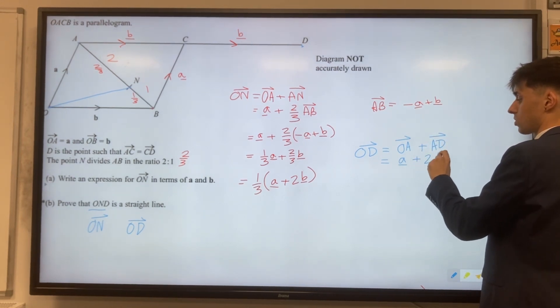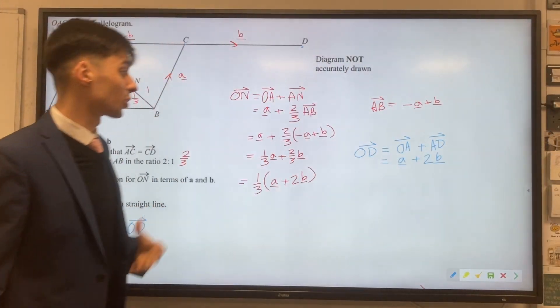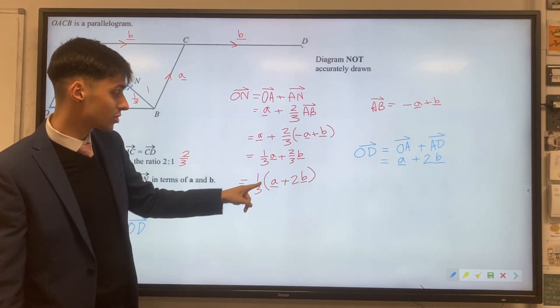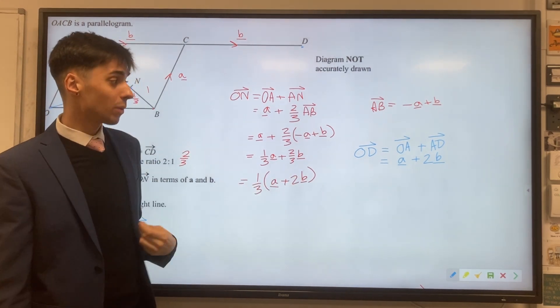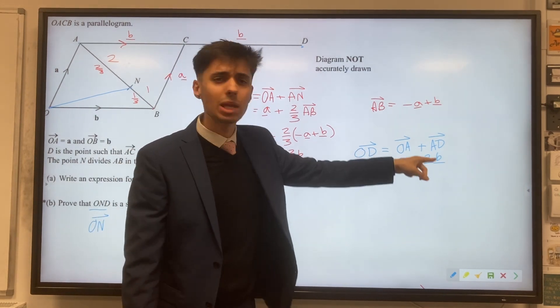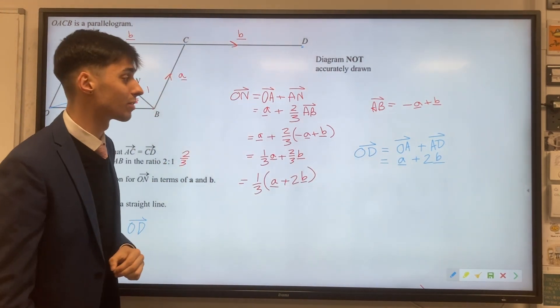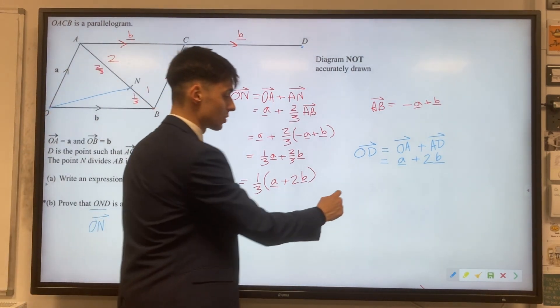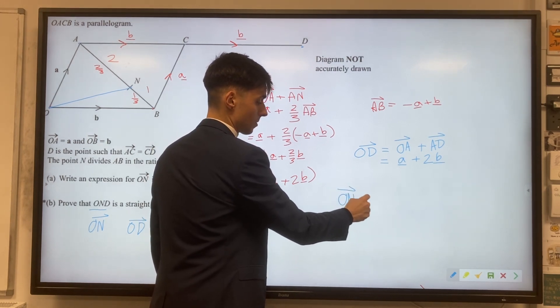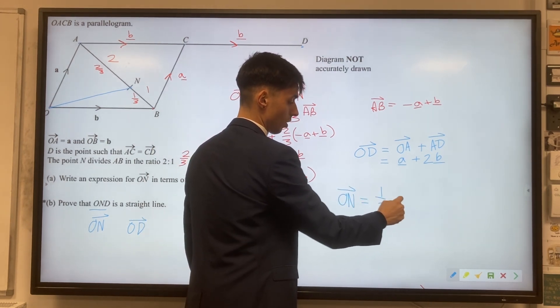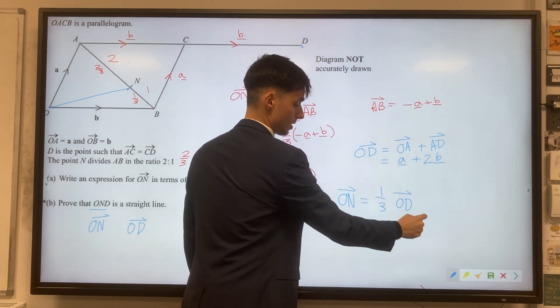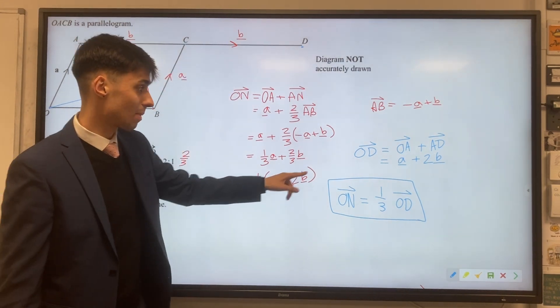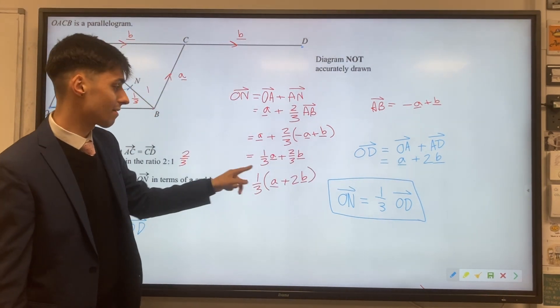They should look really good for us at the moment because we've got vector ON, which was one-third of (a plus 2b). Now we've shown that OD is just a plus 2b. These vectors look really really similar. So actually, making it clear the relationship between them is we can say the vector ON is one-third of the vector OD. This is our relationship between the two vectors, because they're identical inside the brackets, a plus 2b. It was just that factor of one-third.